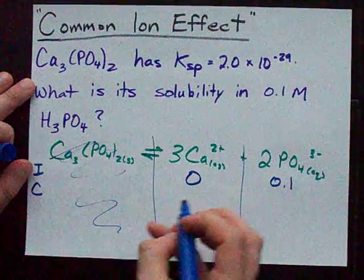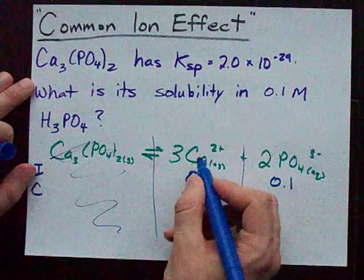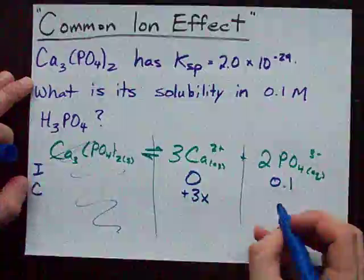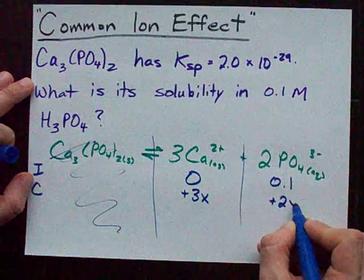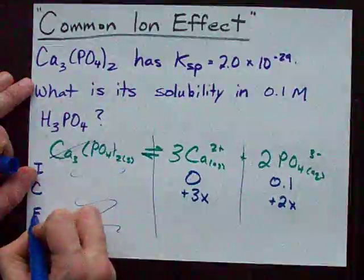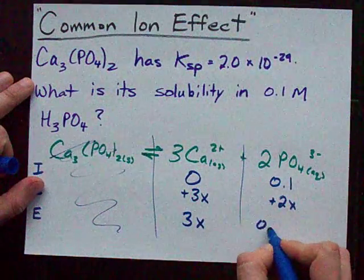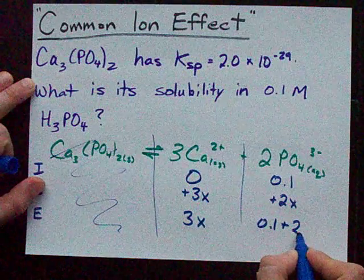My change is that I'm going to gain 3 calciums for every calcium phosphate that dissolved, and I'm going to gain 2 phosphates for each one that dissolved. My equilibrium concentrations then are 3x and 0.1 plus 2x.